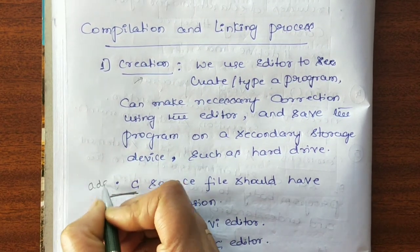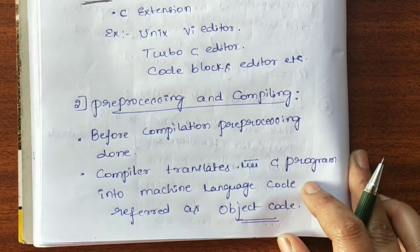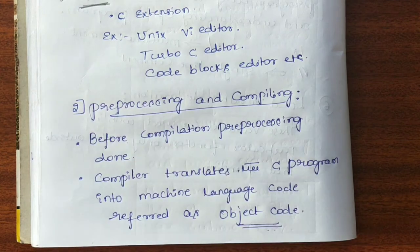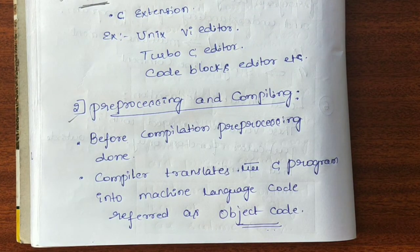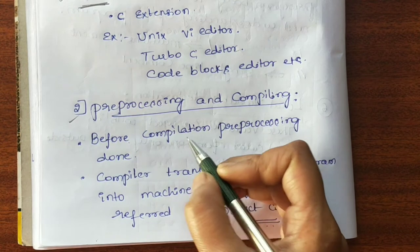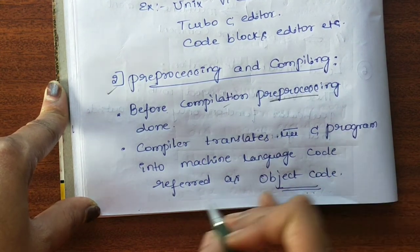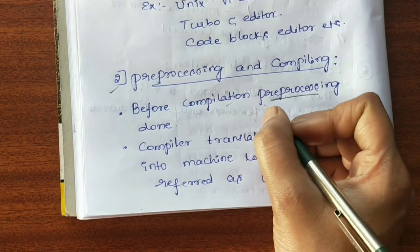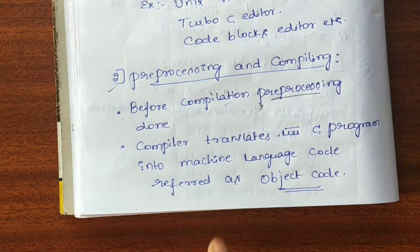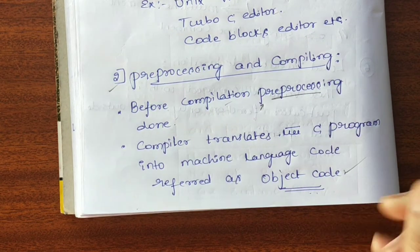The next step is pre-processing and compiling. Once the code is written, we need to compile it — that is, check for errors. Before compilation, pre-processing happens. The compiler translates the C program into machine language code. The C program in English-like statements is converted into machine language code, and that machine language code is called the object code. So the .C file is compiled and a .obj file is produced — for example, sub.c becomes sub.obj after compilation.